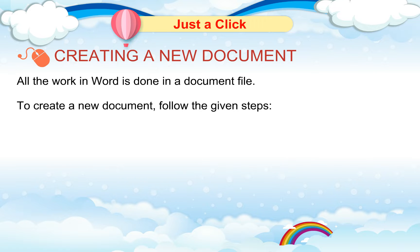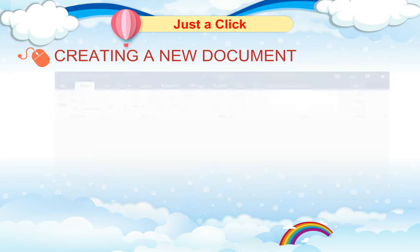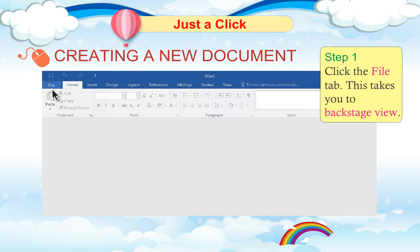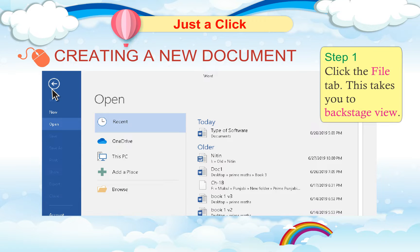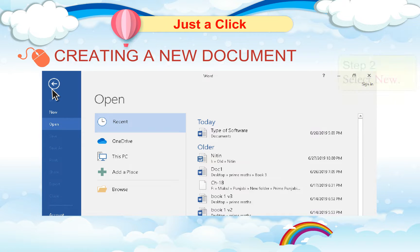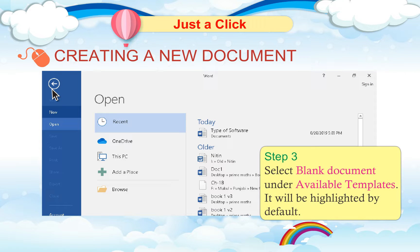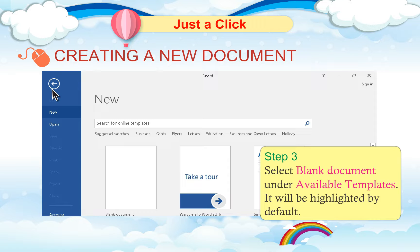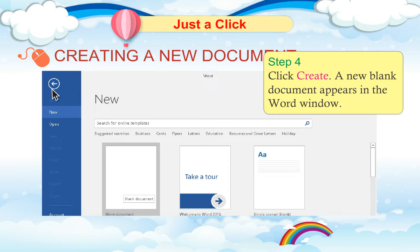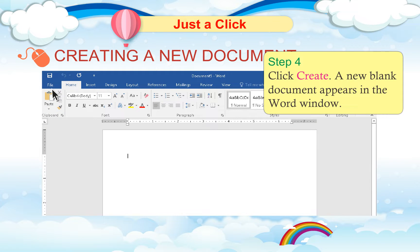Document Area: All the work in Word is done in a document file. To create a new document, follow these steps. Step 1: Click the File tab — this takes you to Backstage view. Step 2: Select New. Step 3: Select Blank Document under Available Templates — it will be highlighted by default. Step 4: Click Create. A new blank document appears in the Word window.